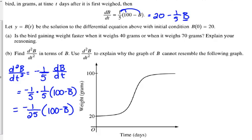Explain why the graph of B cannot resemble the following graph. So this is the graph of the original. We're looking at the second derivative. What does the second derivative tell us about the original? Concavity. The second derivative tells us about the concavity of the original.